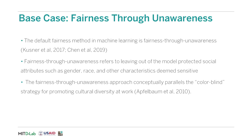The default fairness method in machine learning is fairness to unawareness. Fairness to unawareness refers to leaving out protected attributes such as gender, race, and other characteristics deemed sensitive. While it was thought to erase inequality, it was found actually to perpetuate it. It may do so by having other attributes that are correlated with the protected attributes in the data, which by ignoring the protected attributes, we could still include in our model — and this could actually perpetuate inequality.